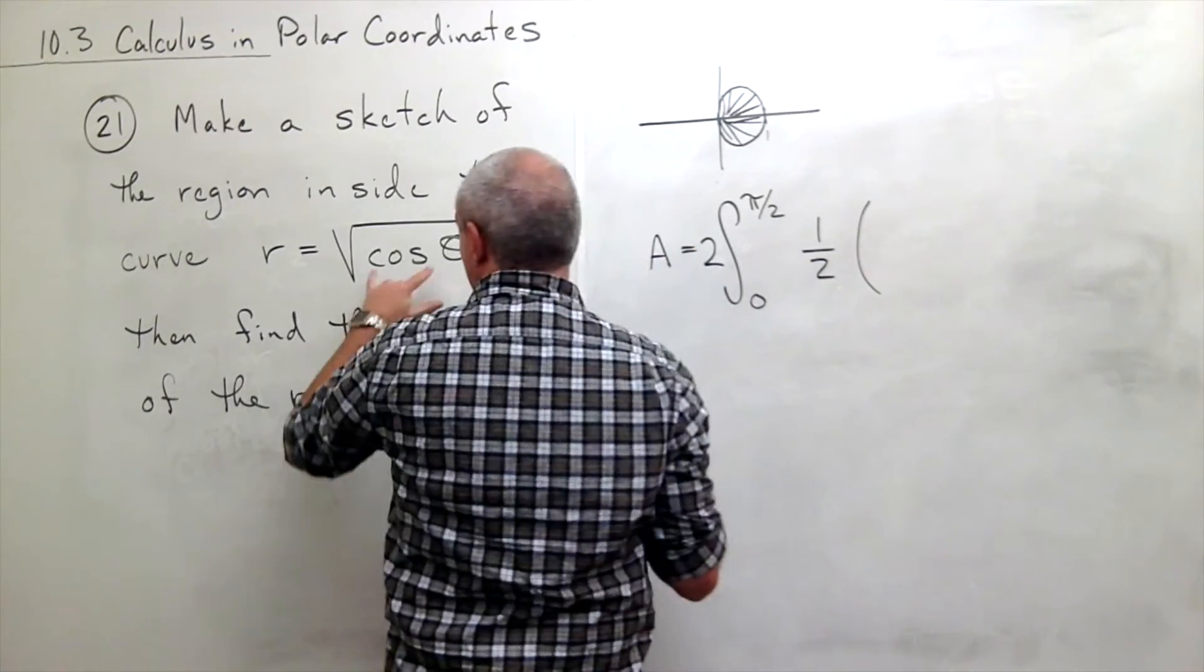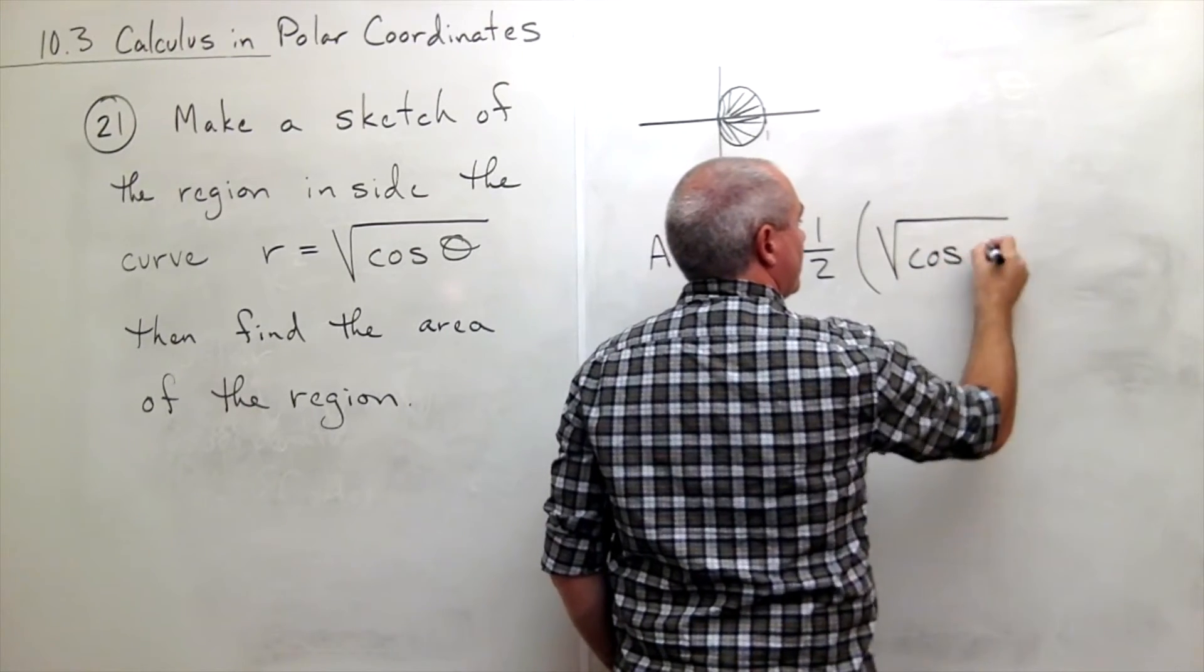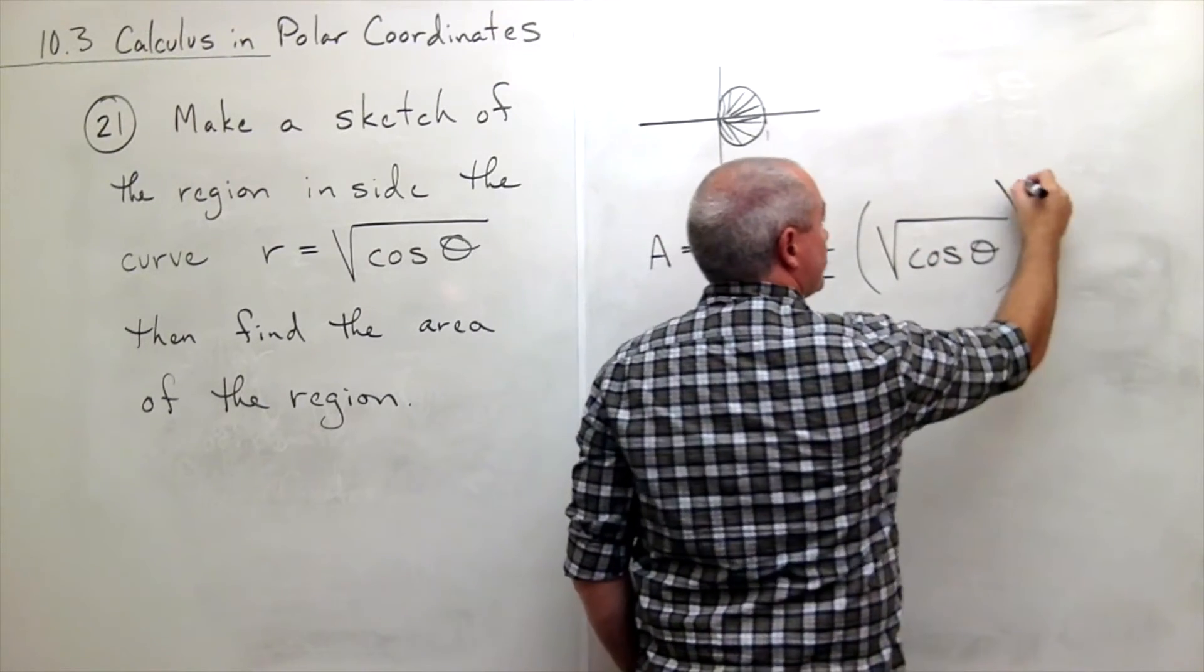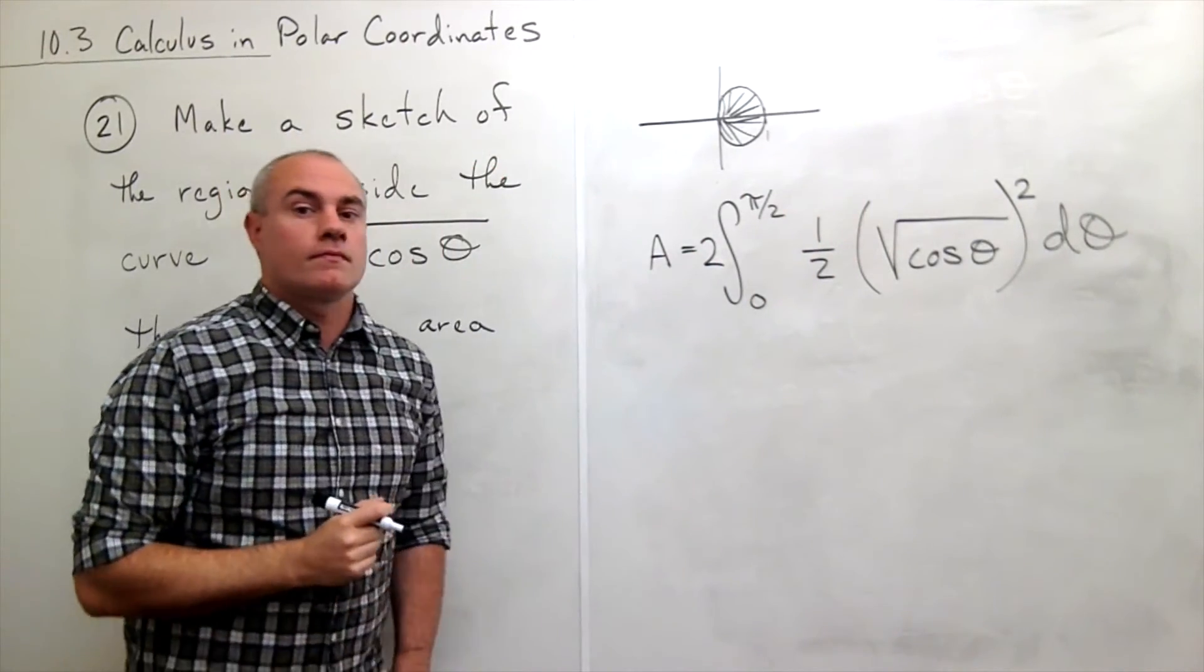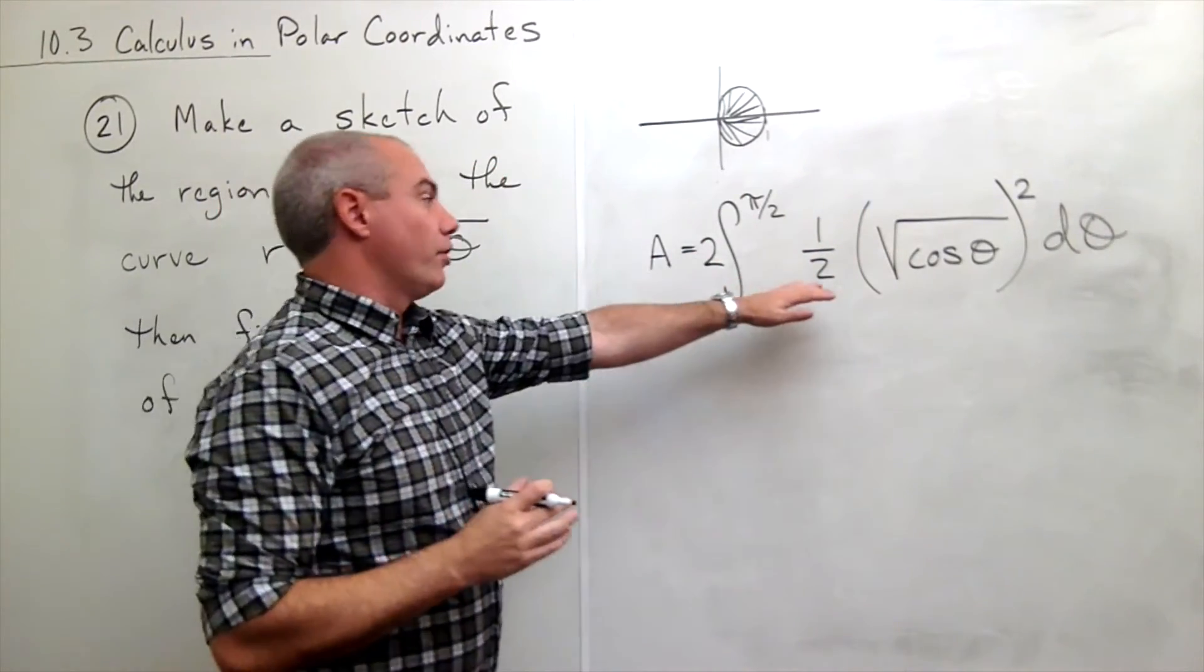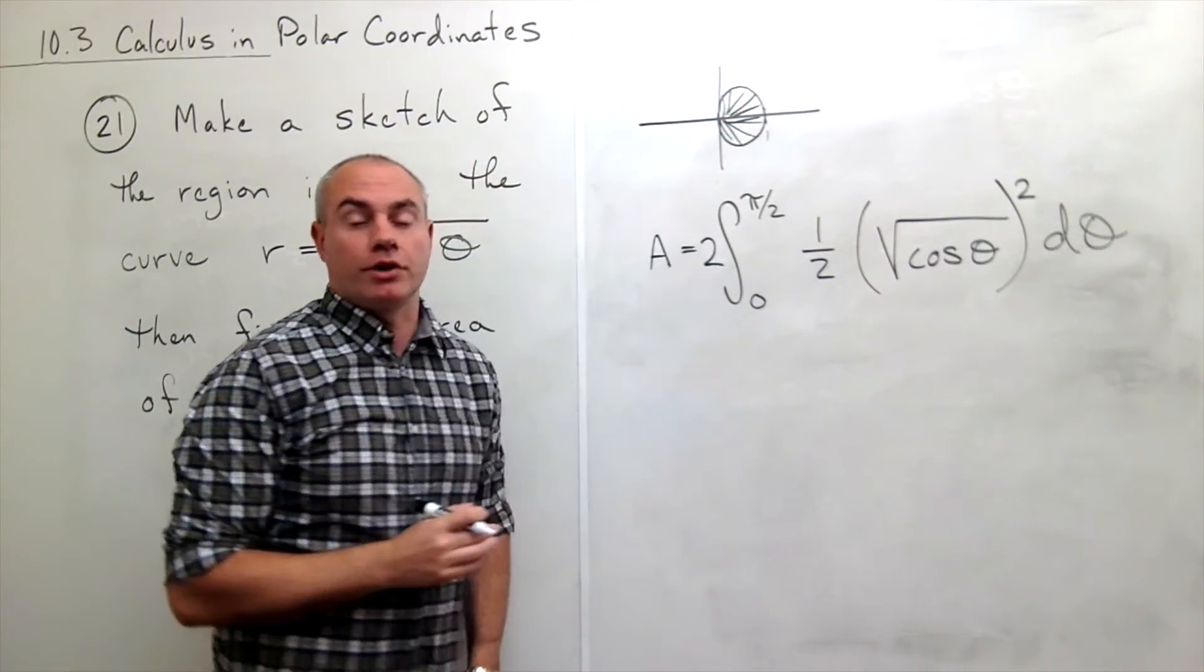r, which is the square root of cosine theta—square root cosine theta quantity squared—d theta. Alright, so this integral will give me the area inside of this polar curve.